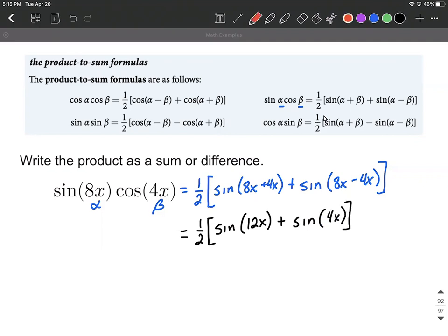The very last thing we may want to do is distribute this one half that was out in front of the whole thing. So my final answer is going to be one half multiplied by sine of 12x plus one half multiplied by sine of 4x.